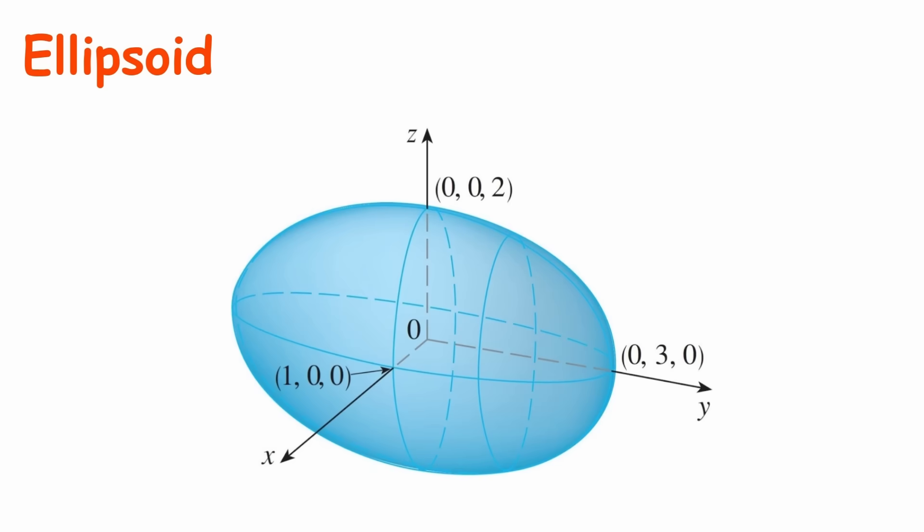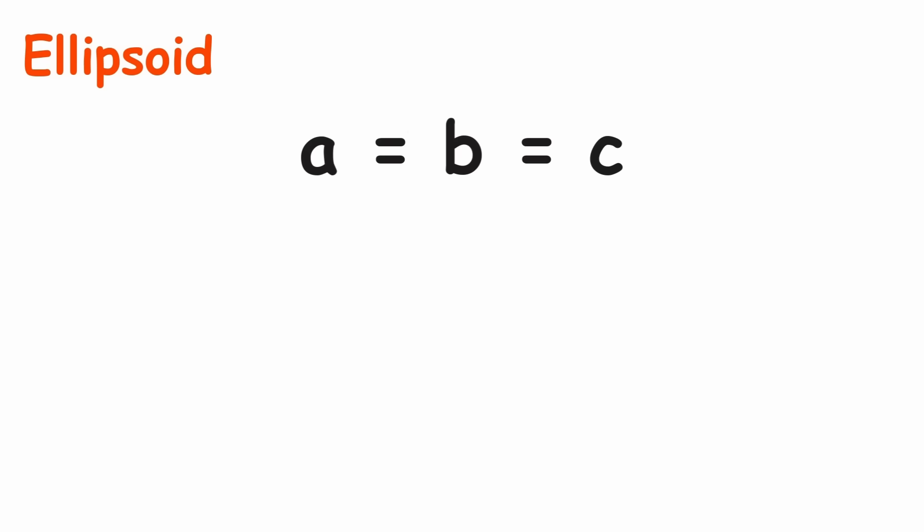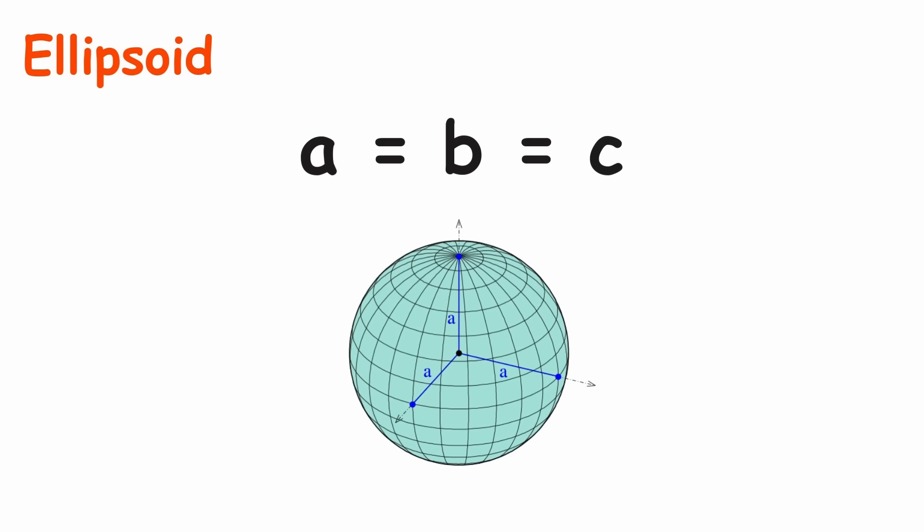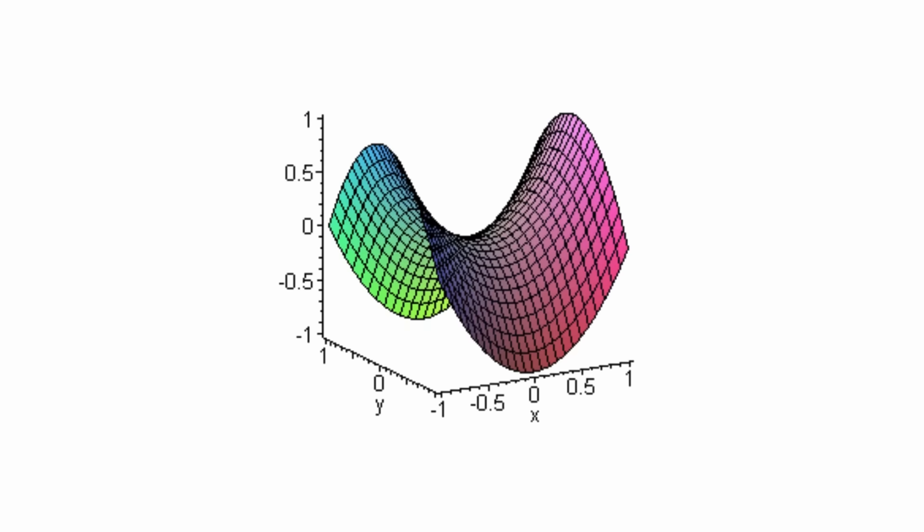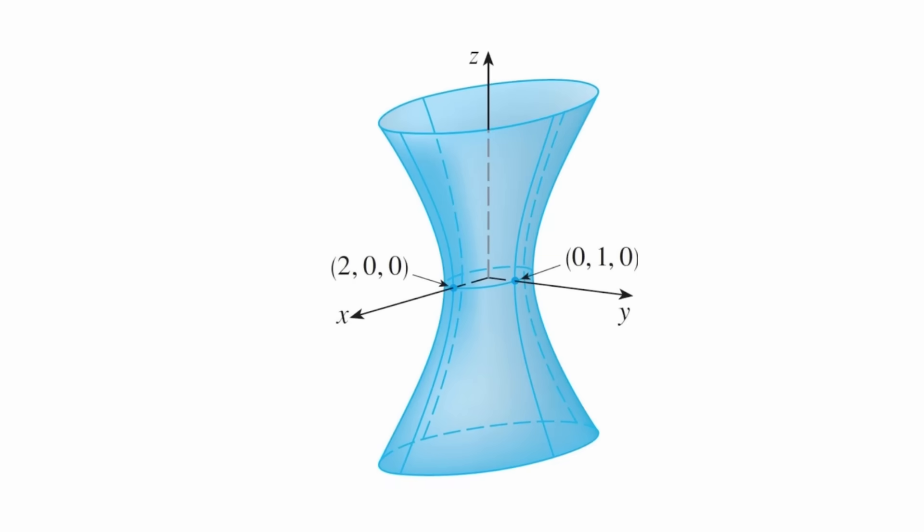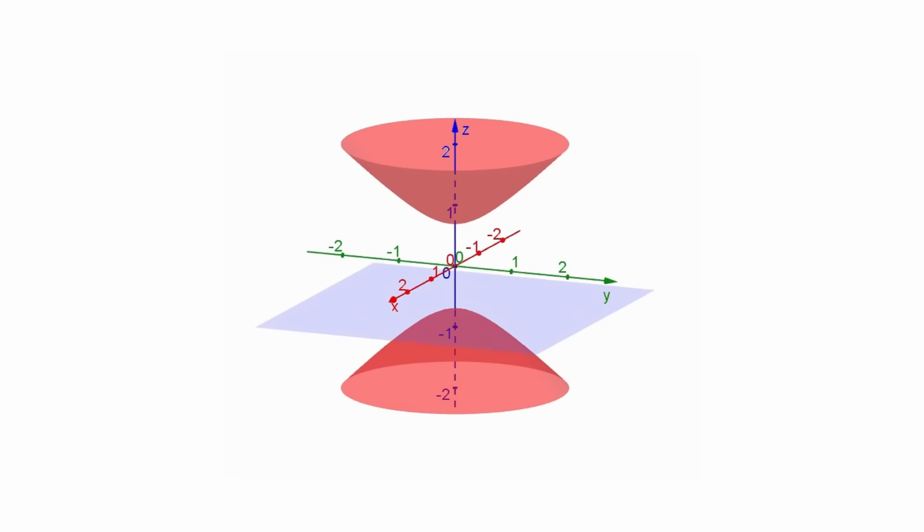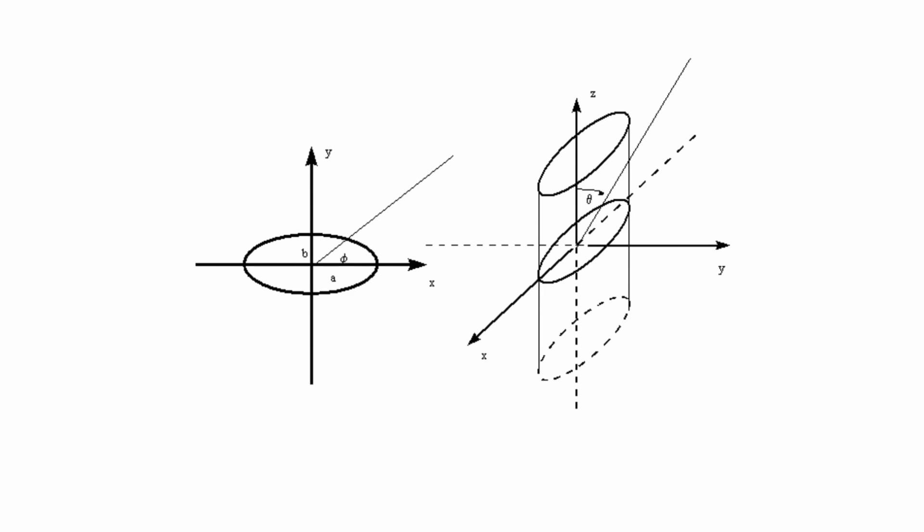The types of quadric surfaces are: ellipsoid, which is a closed and symmetrical surface with respect to the coordinate axes (if A equals B equals C, a sphere is obtained); elliptical paraboloid; hyperbolic paraboloid; hyperboloid of one sheet; hyperboloid of two sheets; elliptical cylinder; and elliptical cone.